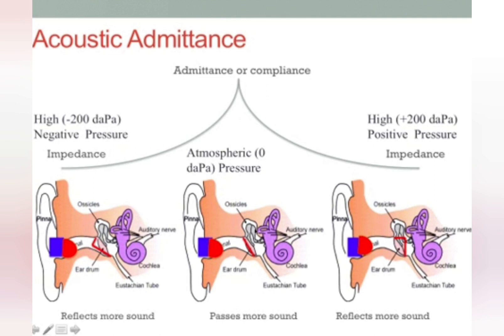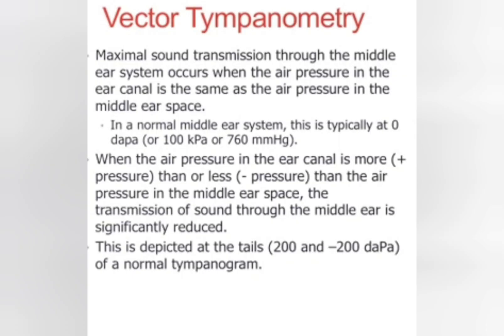When the pressure in the middle ear is either positive or negative, the tympanic membrane becomes less compliant, meaning less sound is transmitted in and most of the sound is reflected back. So maximum sound transmission through the middle ear system occurs when the pressure in the air canal is the same as in the middle ear space. That's when we talk about the compliance of the tympanic membrane.